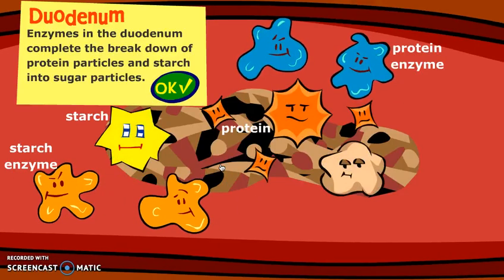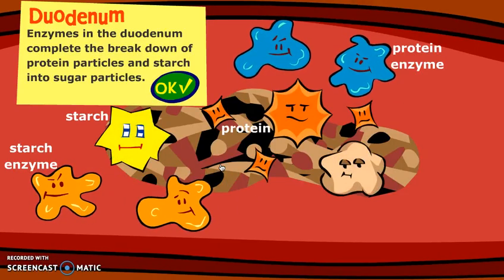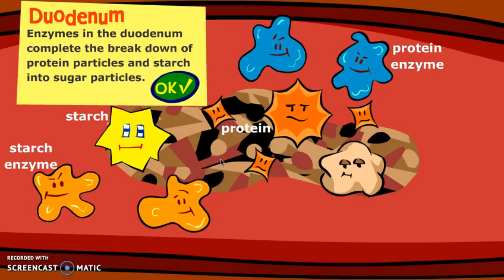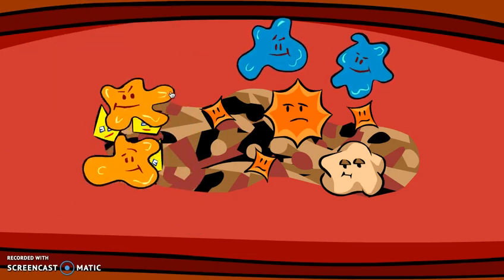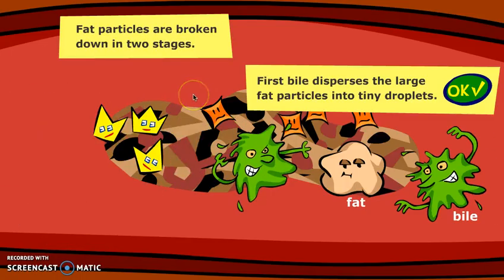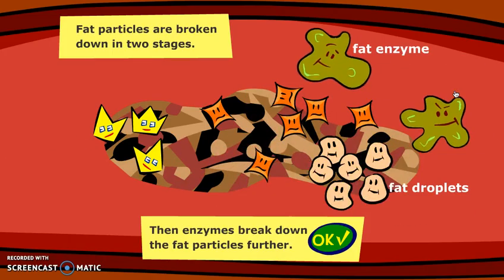Once in the duodenum, we have more enzymes ready — a starch enzyme and a protein enzyme — ready to break down remaining protein particles and starch into sugar particles. Over here we have a large globule of fat. Bile molecules come along to first emulsify the fat to make it more soluble in water, allowing the large fat globule to be broken down into smaller pieces. Then enzymes that work specifically with fat molecules break down the fat particles into fatty acids and glycerol.